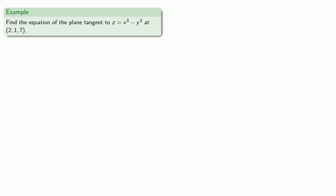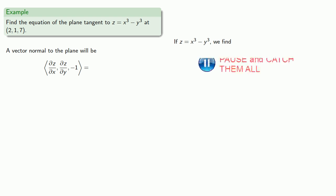So we've already solved this problem the old way. Let's solve it the new way. A vector normal to the plane will be (∂z/∂x, ∂z/∂y, -1). So we find our partial derivatives, which gives us our normal vector.